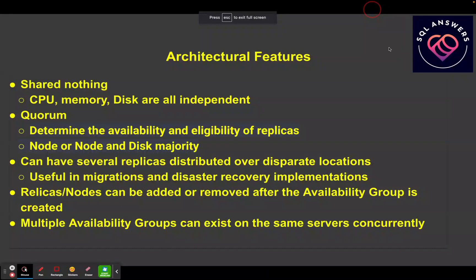Some of the architectural features of availability groups: first of all, they're shared nothing, which means all of the replicas have independent CPU, memory, and disk — they're not sharing anything. We've also got Quorum, which allows the availability group to decide the health of the replicas in the system.